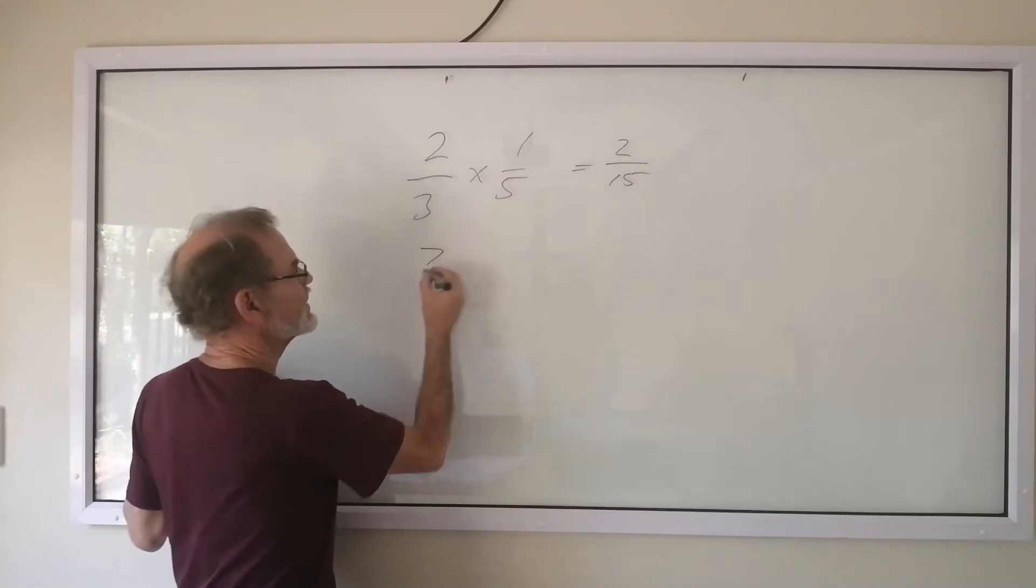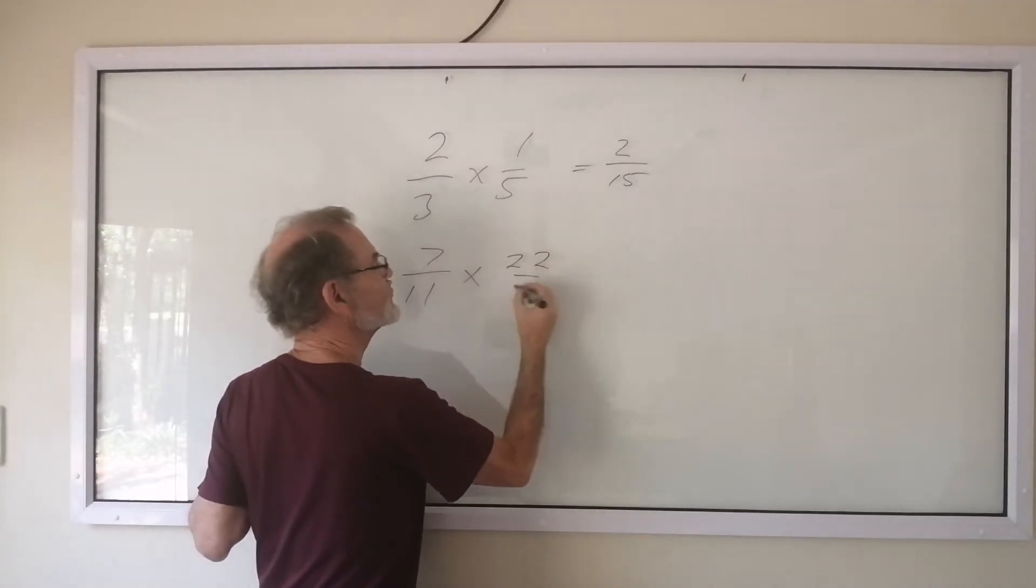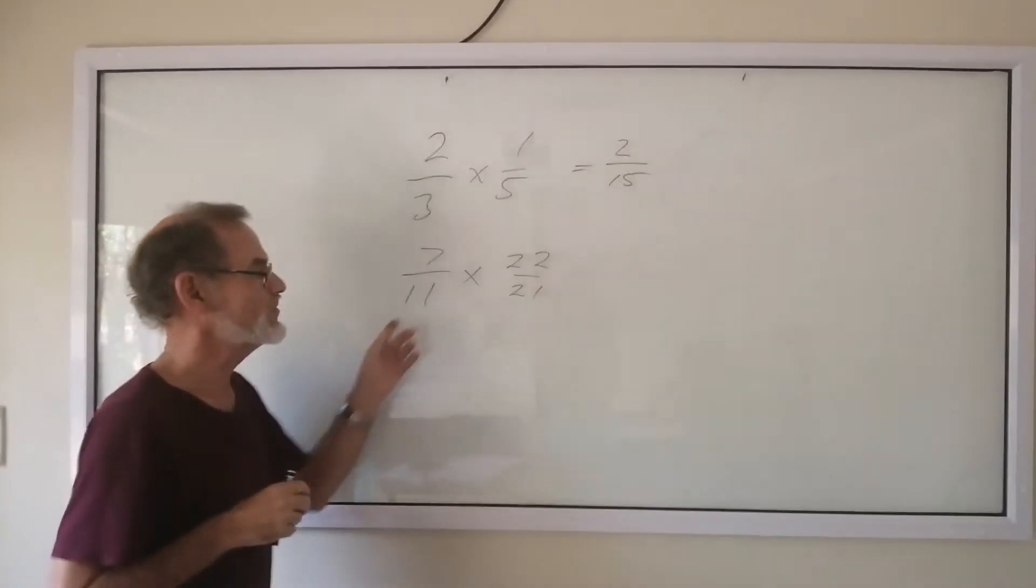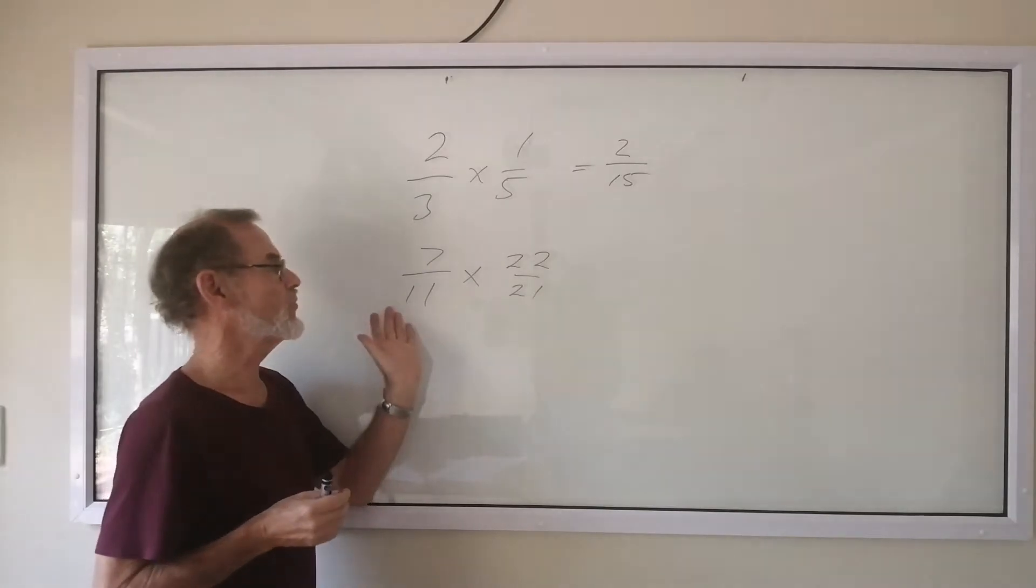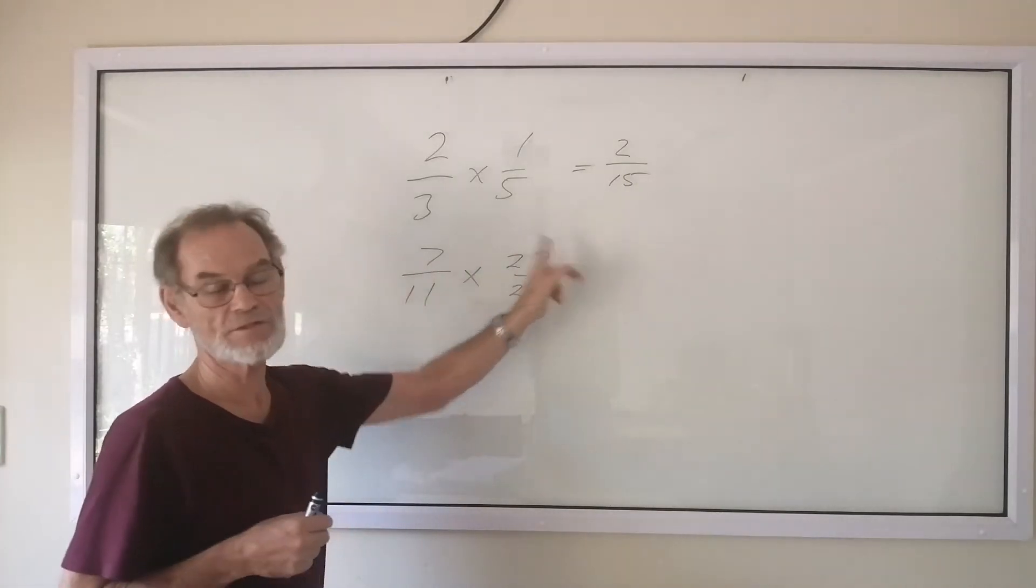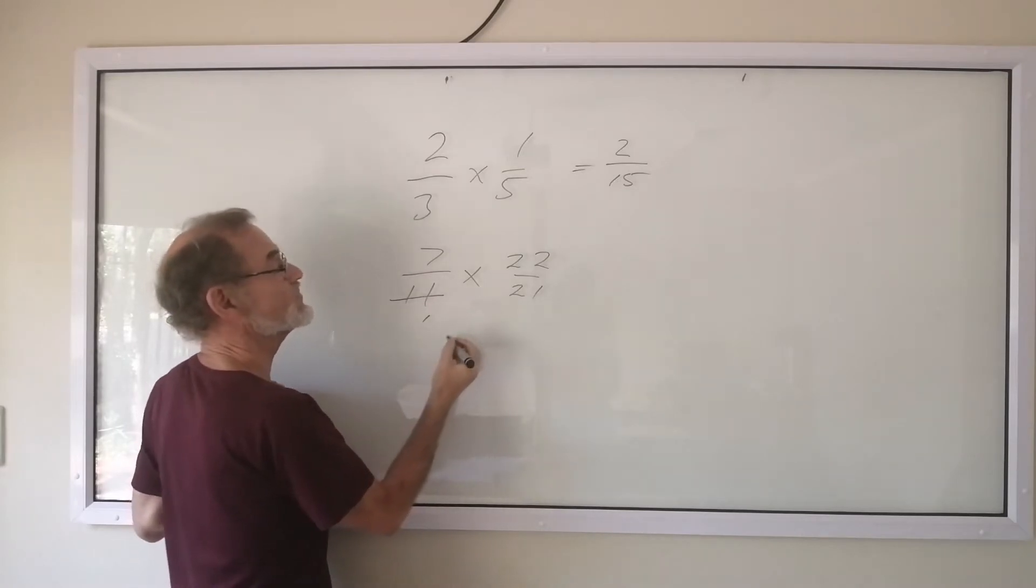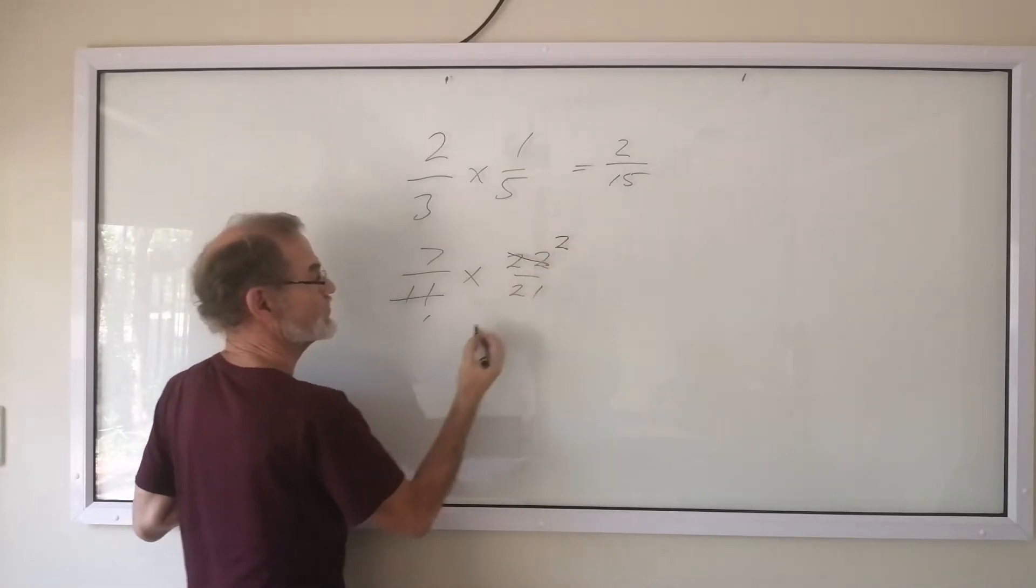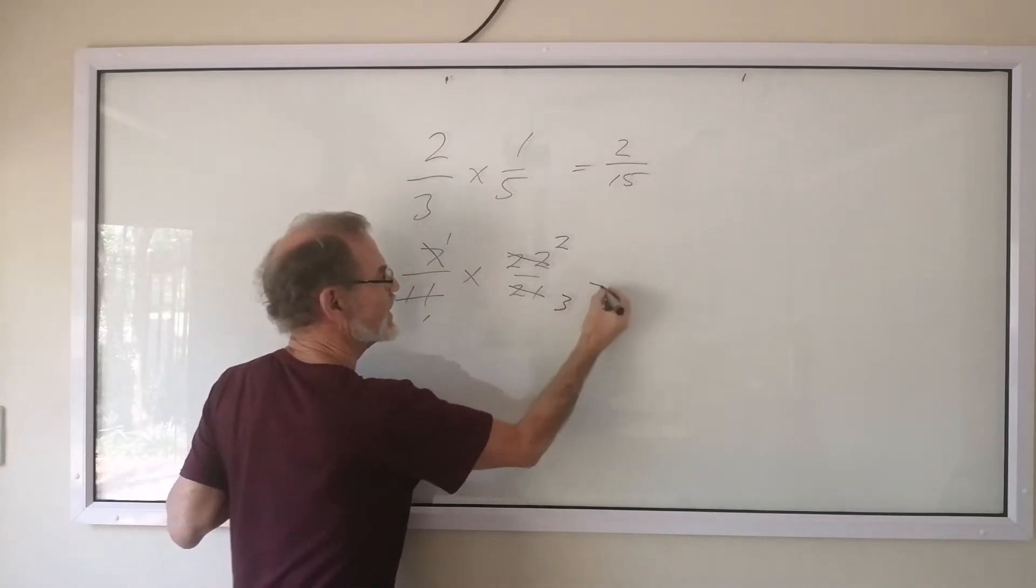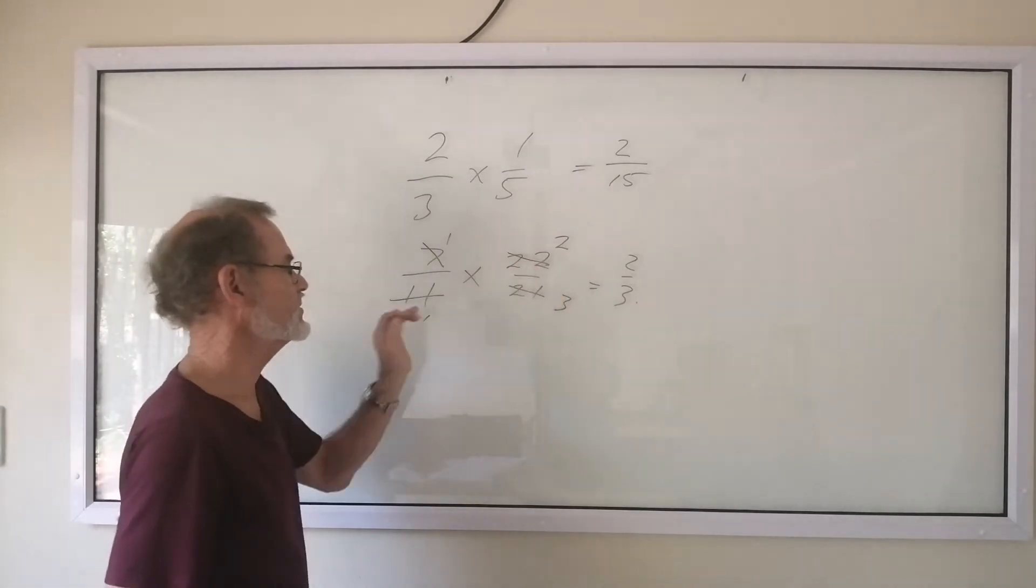If your numbers are bigger, and there's 7/11 and you're multiplying it with 22/21, for example, not many people know their 21 and 22 times tables. So we can simplify this by cancellation. We look for common factors here and here, and 11 and 22 have common factors. We divide 11 into itself, we get 1. 22 divided by 11 gives 2. 7 divided by 7 gives 1. 21 divided by 7 gives 3. And the answer is 2/3. Much easier than having to multiply 7 by 22 and 11 by 21.